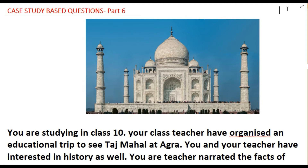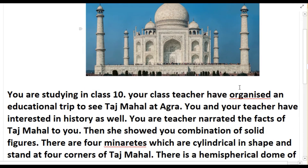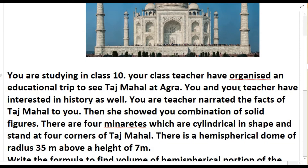The question goes like this: you are studying in class 10, your class teacher has organized an educational trip to see the Taj Mahal at Agra. You and your teacher are interested in history. Your teacher narrated the facts of the Taj Mahal, then she showed you the composition of solid figures. There are four minarets which are cylindrical in shape and stand at four corners of the Taj Mahal. There is a hemispherical dome of radius 35 meters above a height of 7 meters.